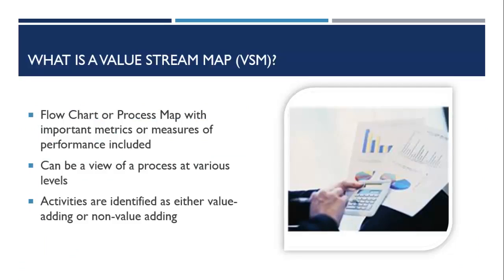What is a value stream map or VSM? Simply defined, a VSM is a flowchart or process map with important metrics or measures — such as time, number of defects, outputs, delays, and money — of the performance included.